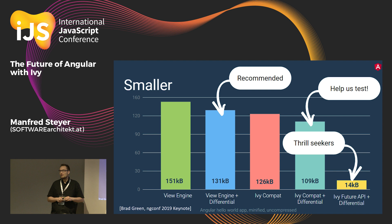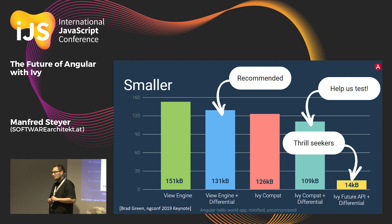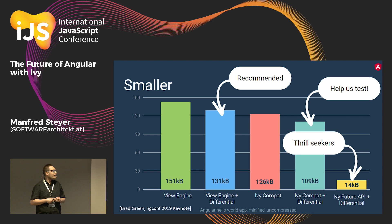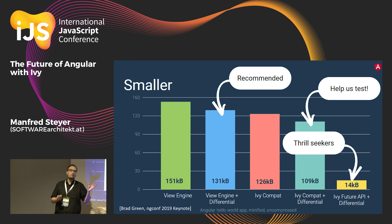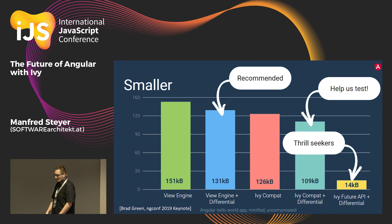Differential loading means that your browser gets an optimized bundle — if the browser supports ECMAScript 2015, it gets an optimized ECMAScript 2015 bundle; if not, it gets an ECMAScript 5 bundle. So a hello world application has about 131 kilobytes, which is quite big. When using Ivy together with differential loading, we can spare about 20 kilobytes. But if you look at the last bar — the bar for thrill seekers — you see the true potential of Ivy: using the private APIs Ivy provides, you can shrink this hello world application to 14k, smaller than every single page application using any framework. In the long term, this is where we can land.